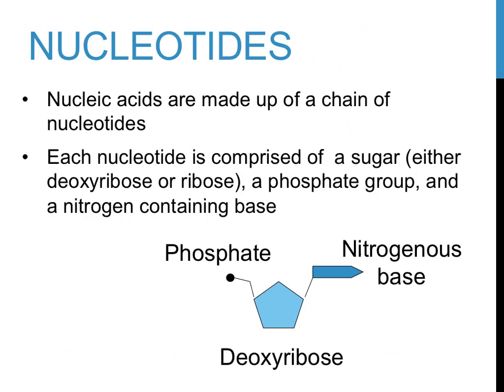Each nucleotide, an example of which is shown on this slide, is made up of three different groups: a phosphate group, shown on the left; a nitrogenous or nitrogen-containing base, shown on the right; and a sugar, either deoxyribose or ribose, depending on the different type of nucleic acid being described, on the bottom.